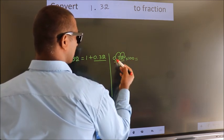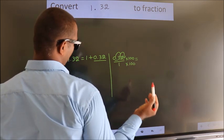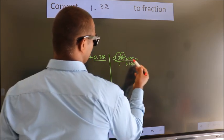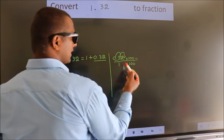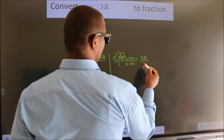Whatever you are multiplying in the numerator, in the denominator also do the same. 0.32 into 100 equals 32. 1 into 100 equals 100.